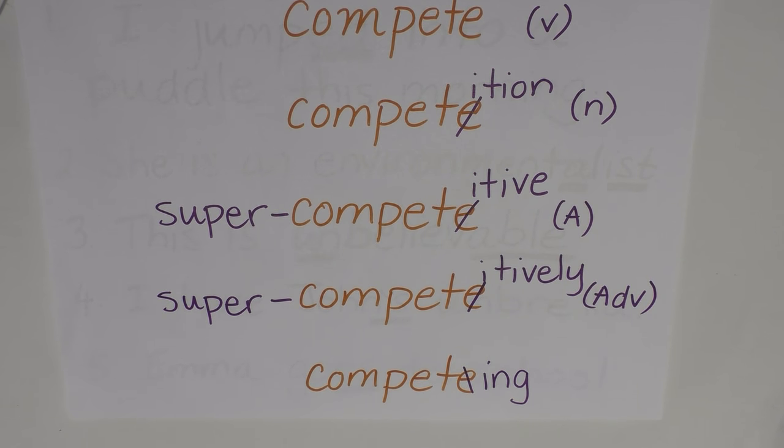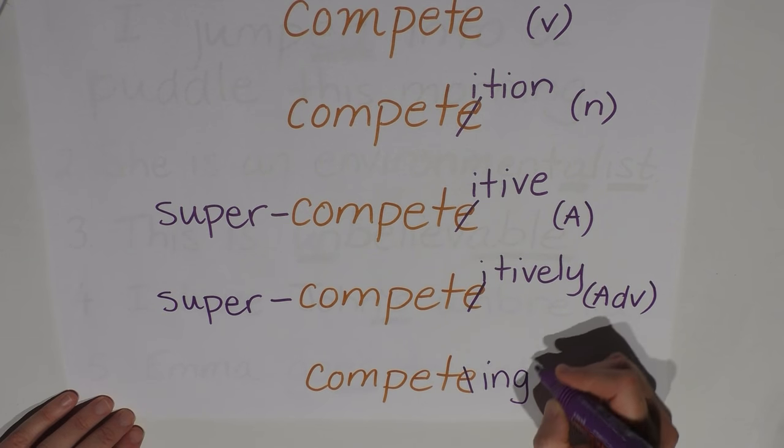And that's because -ing can be the gerund, which is a type of noun. For example, competing is something she takes very seriously. In that situation, competing becomes a noun.